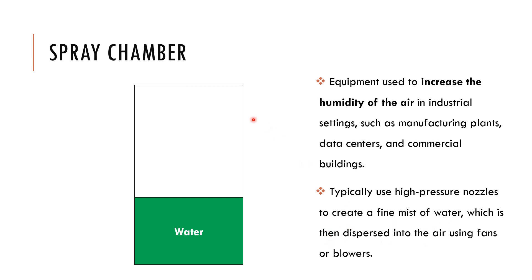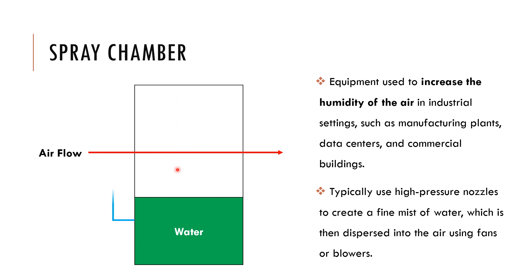Looking at the pictorial diagram: imagine you have a water tank with an air space on top, and an airflow on top forced by either a fan or a blower. We take water from the tank and spray it onto the airflow. The water is dispersed as a fine mist through small nozzles at high pressure, and because of the small particles it disperses in air and the air gets humidified.